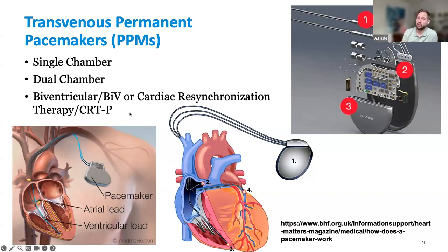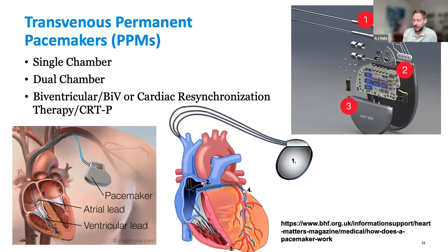Left bundle area pacing and His bundle pacing typically use a standard pacemaker — you just have to program it differently, but the generator itself isn't special. It's just the placement of the lead that matters. Historically we went for apical placement; people then went more septal, then His bundle came along, and finally left bundle, which involves drilling into the septum. I would not recommend doing that without a proctor, as it's higher risk without experience. I see those procedures take about as long as a normal dual chamber.